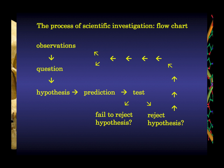In science, when a hypothesis withstands a prediction and test, you then frame a second prediction based on that hypothesis and make another test. It may be on your second round that you do reject your hypothesis — it passed the first test but not the second, so it must be wrong. The goal is to stay on this loop of hypothesis, prediction, test. The longer you stay on this loop, the more confidence you have that your hypothesis is at least a reasonable approximation or representation of reality.